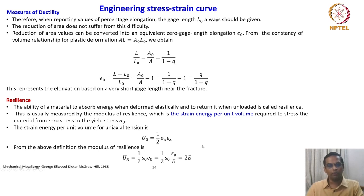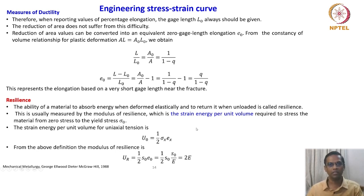Here, S_naught is the proof stress. If the material does not show a distinct yield point, we use something called a proof stress, which is considered the yield stress. S is engineering stress, and S_naught is the proof stress.